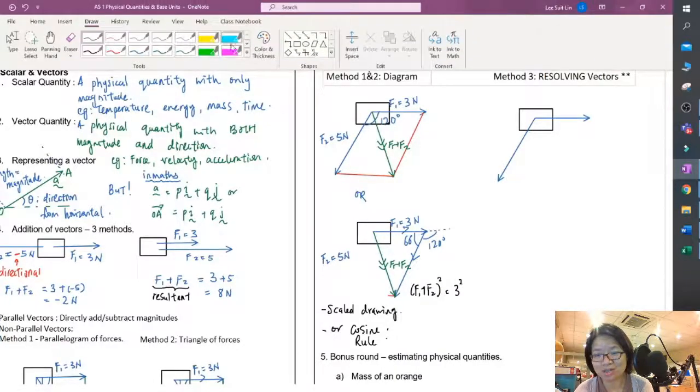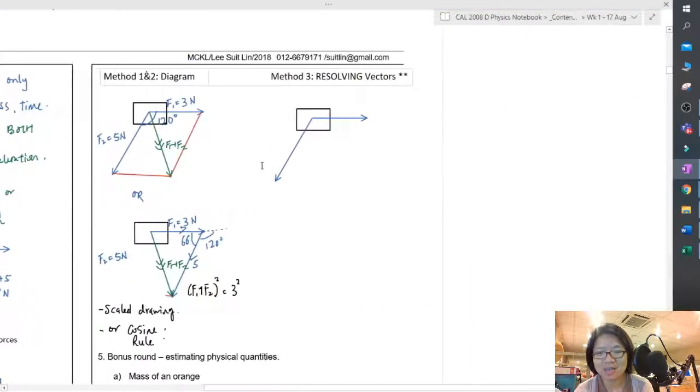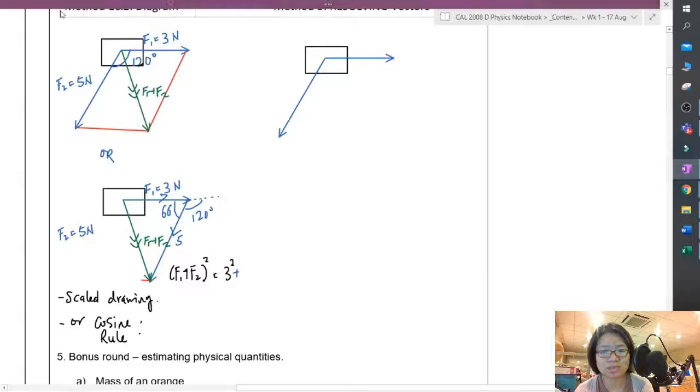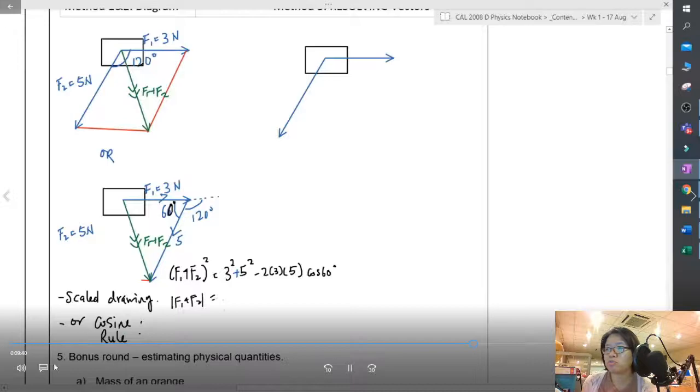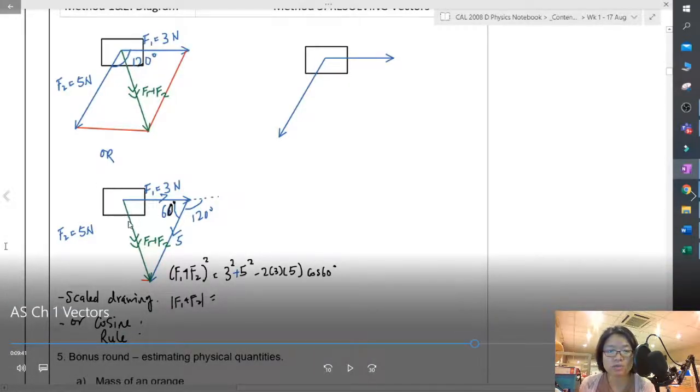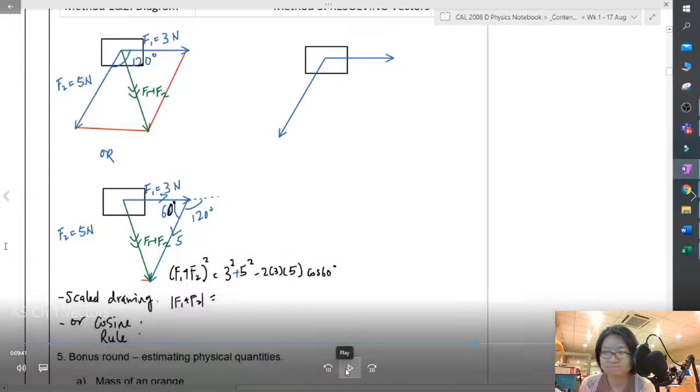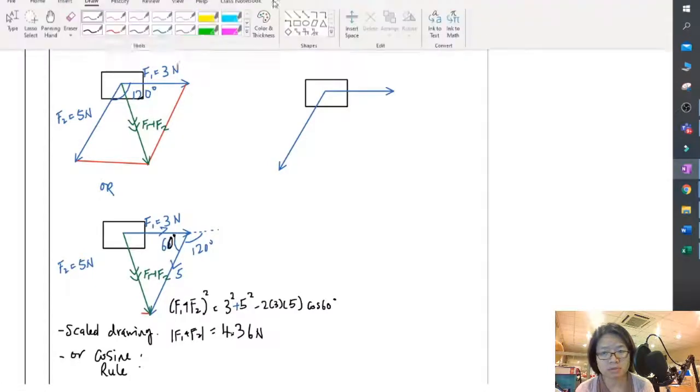Or if you don't use scale drawing and measure the length, then what you can do is you can use the cosine rule. You remember the cosine rule: a² = b² + c² - 2bc cos θ. Of course, this one we seldom see, but it is not wrong. Just as a recap, I want to find the length of this green arrow. The length of the green arrow is opposite 60. So substituting the values and then pressing my calculator, I'll get 4.36 N. Scale drawing is always acceptable unless they say you cannot.